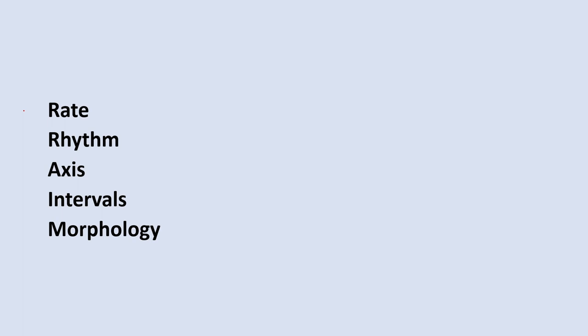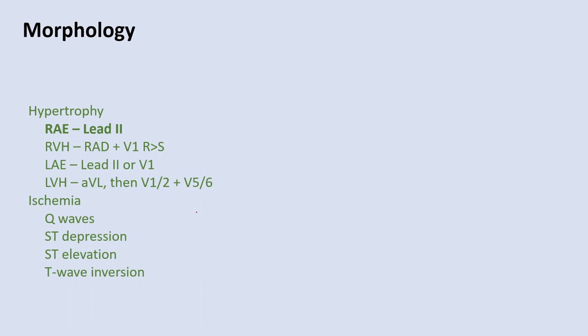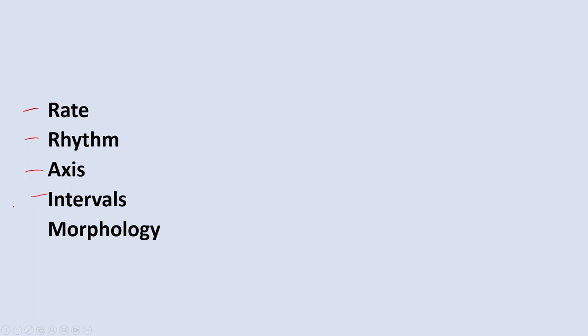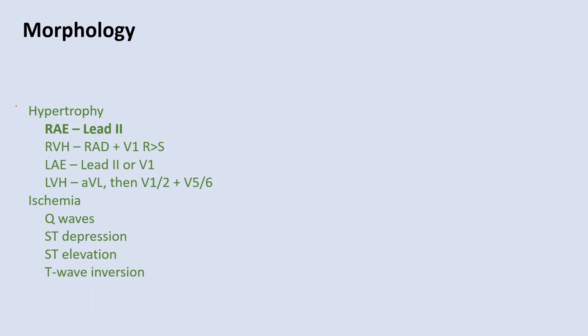Finally, we're going to talk about morphology. After going through all the previous steps with the attending, we move to morphology. First, we look for signs of hypertrophy, then signs of ischemia. For hypertrophy, we look for right atrial enlargement, right ventricular hypertrophy, left atrial enlargement, or left ventricular hypertrophy.